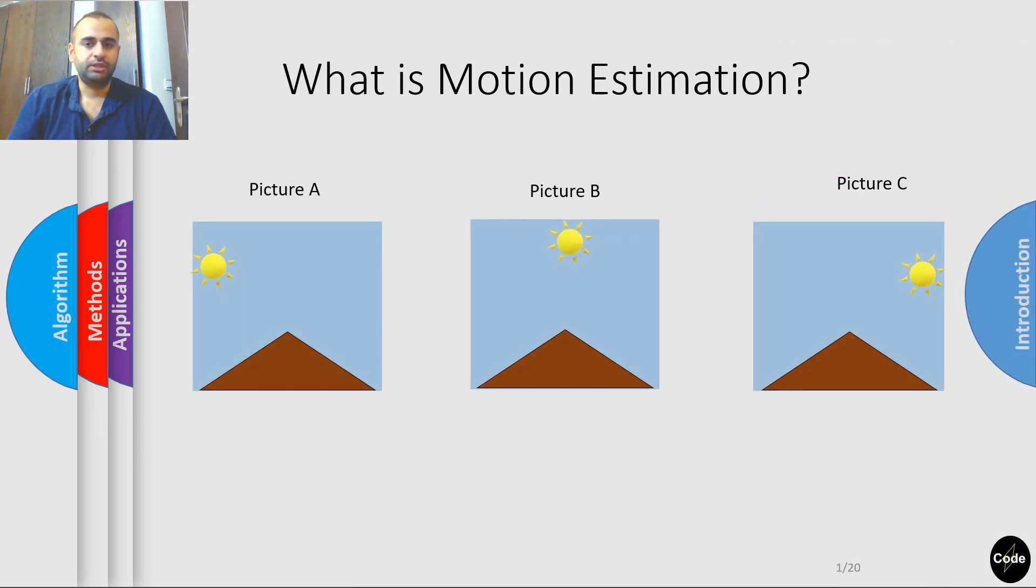So what is motion estimation? The objective of this algorithm is to determine a motion vector that indicates the displacement of a group of pixels within some images.